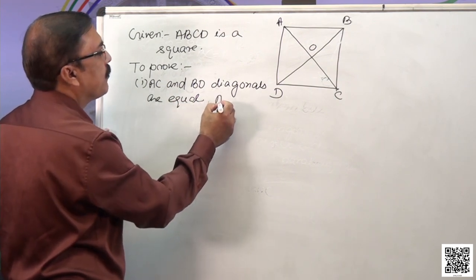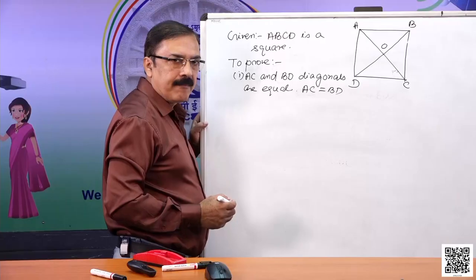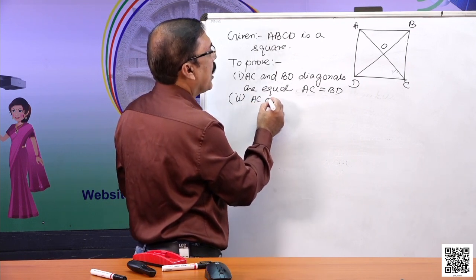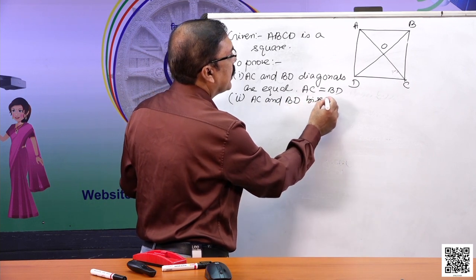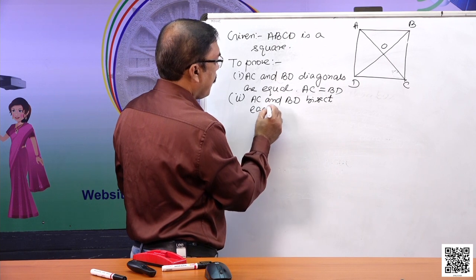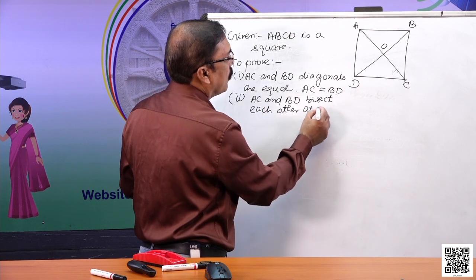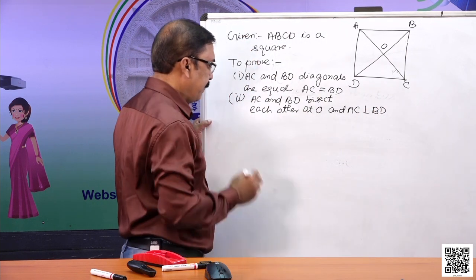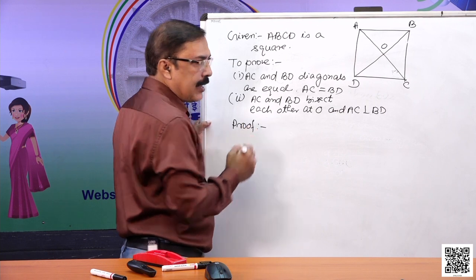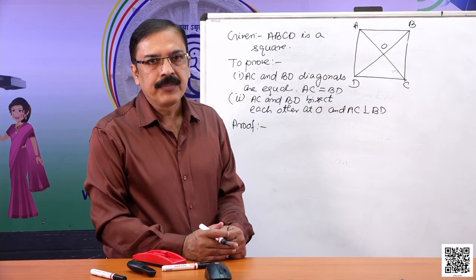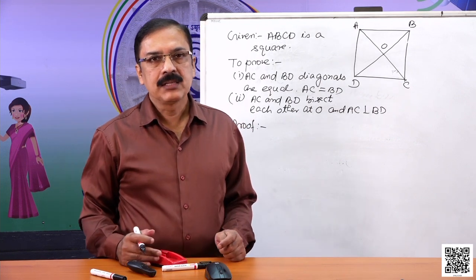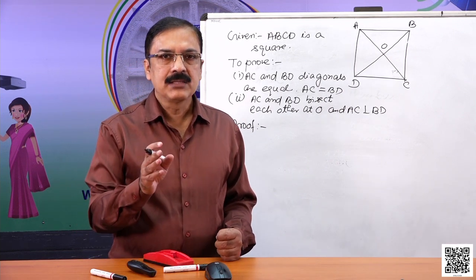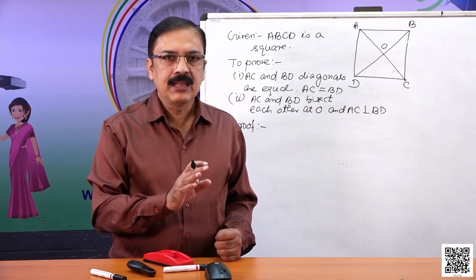To prove: AC equals BD, and also AC and BD bisect each other at O, and AC is perpendicular to BD. As we discussed earlier, a square is both a rectangle and a rhombus, so it has both the properties of rectangle and rhombus. We can use that.